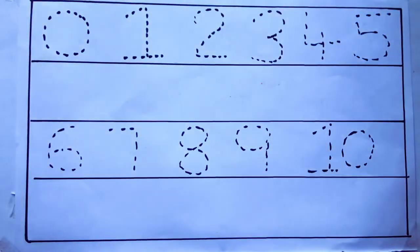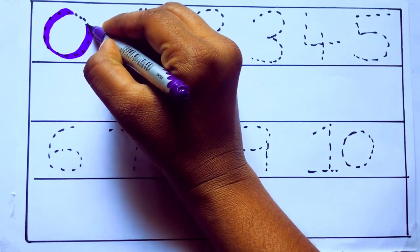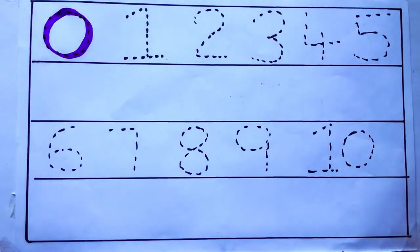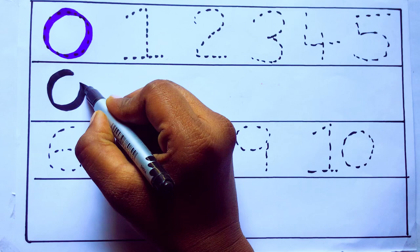Let's draw numbers. Violet color 0, Z-E-R-O. Violet color 0.